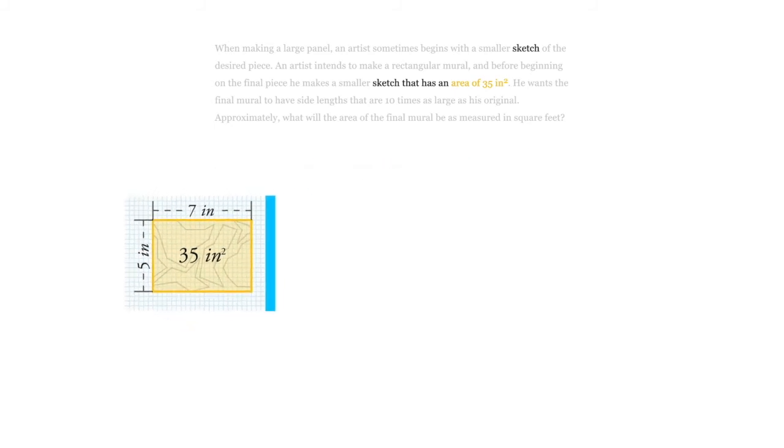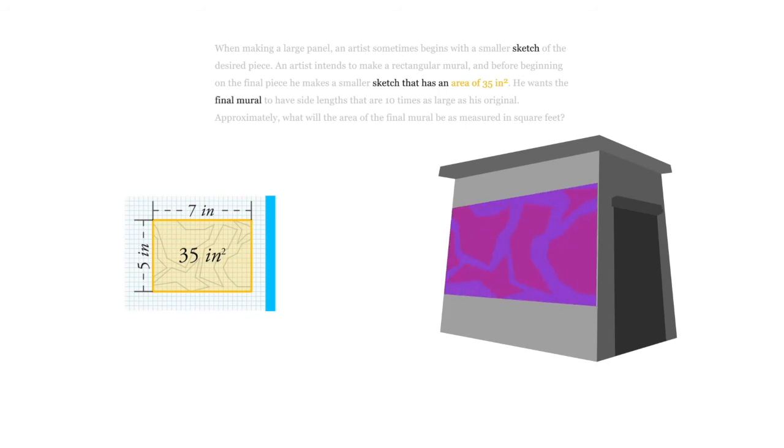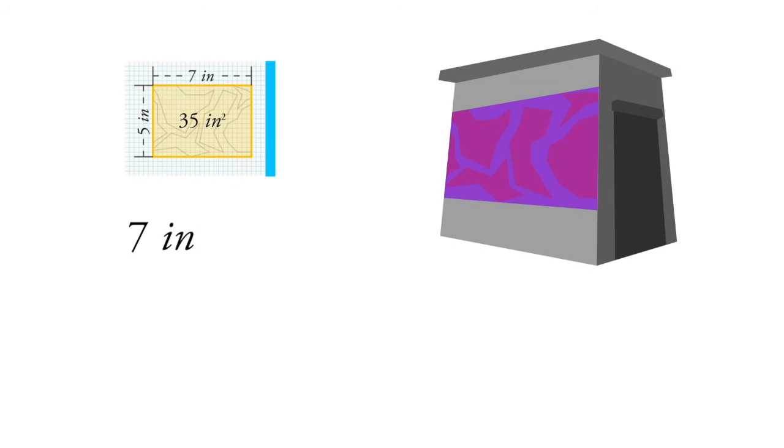And this muralist wants to have a final mural with side lengths that are 10 times as large as the original. So 10 times bigger than the sketch is what's going to be on the side of the building. So we're going to take this dimension of 7 inches and turn it to 70 inches, and we'll take this dimension of 5 inches and turn it to 50 inches.